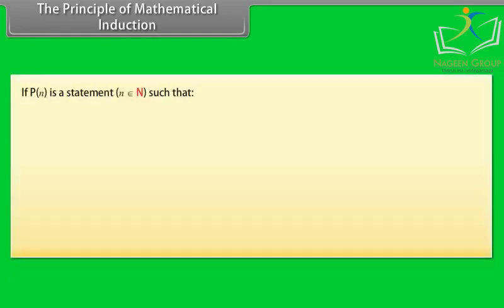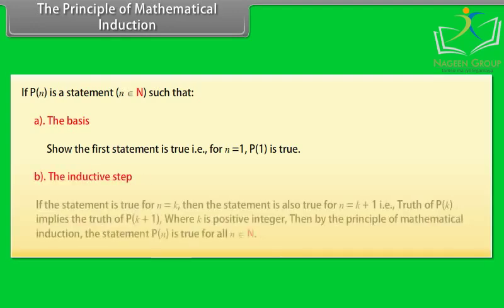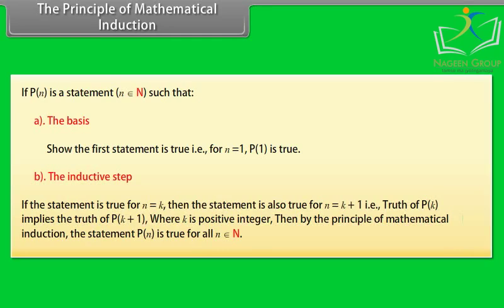The principle of mathematical induction. If P(n) is a statement, n belongs to N, such that: The basis — show the first statement is true, that is, for n equal to 1, P(1) is true. The inductive step — if the statement is true for n equal to k, then the statement is also true for n equal to k+1, that is, truth of P(k) implies the truth of P(k+1), where k is a positive integer. Then by the principle of mathematical induction, the statement P(n) is true for all n belonging to N.